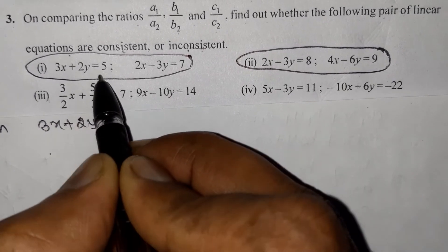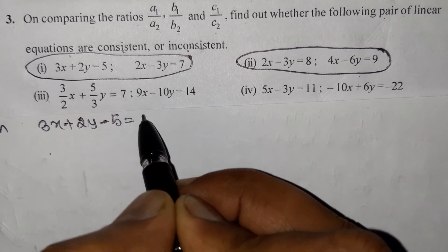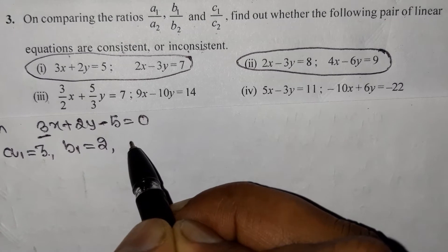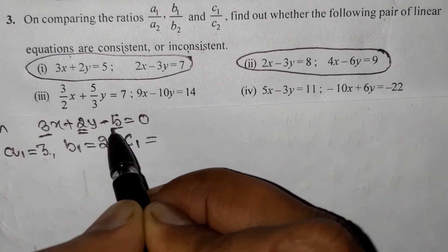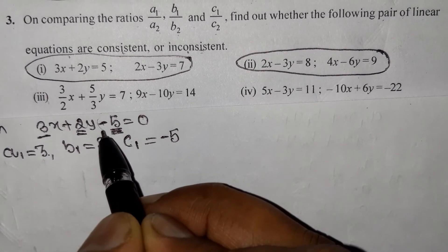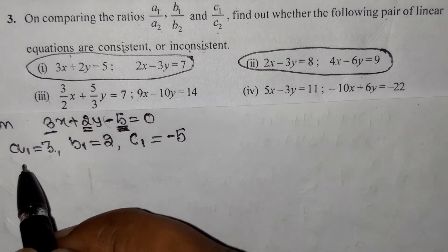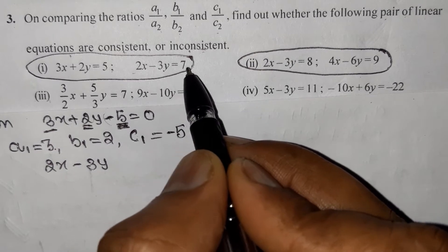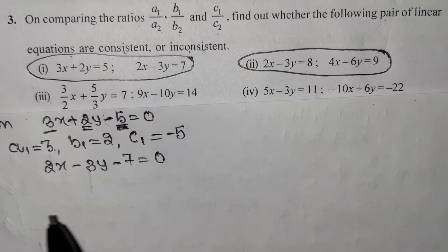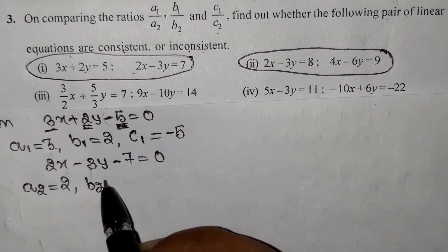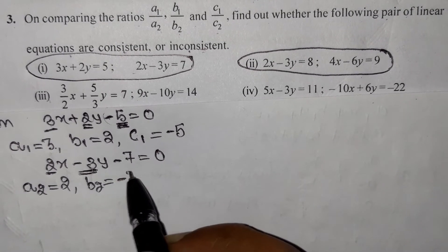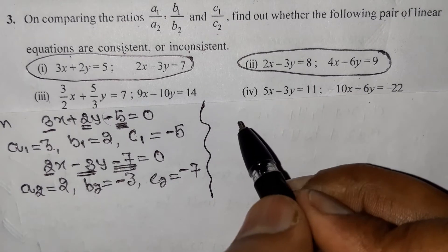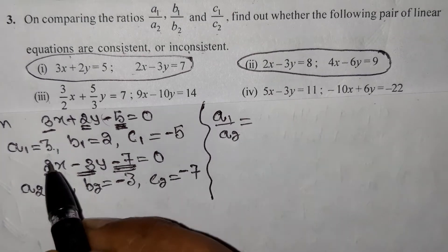First pair: 3x + 2y = 5, rewritten as 3x + 2y − 5 = 0. So A1 = 3, B1 = 2, C1 = −5. Second equation: 2x − 3y = 7, rewritten as 2x − 3y − 7 = 0. So A2 = 2, B2 = −3, C2 = −7. Now comparing: A1/A2 = 3/2, B1/B2 = 2/(−3) = −2/3.